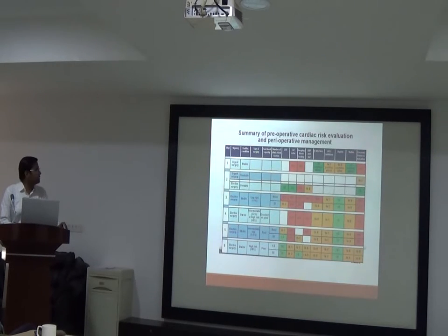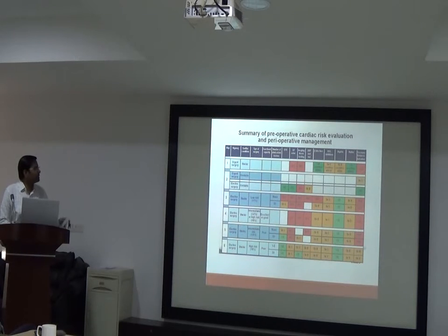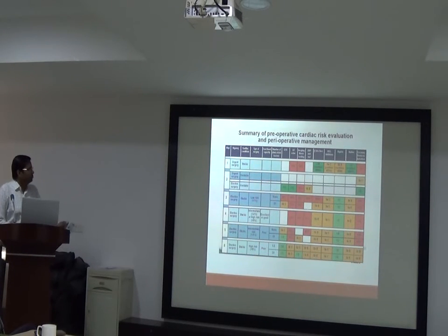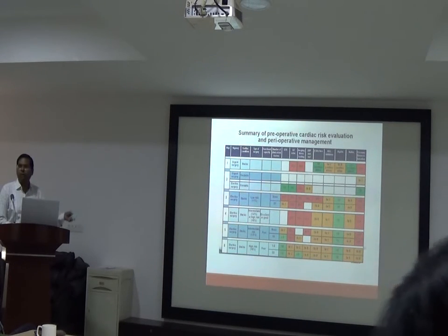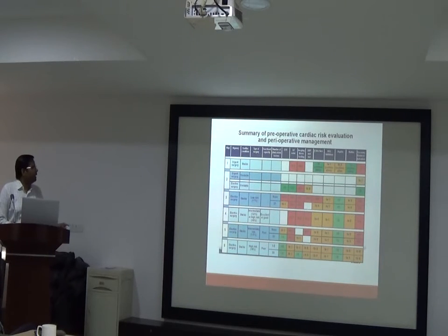Here is the summary table of everything discussed. For investigation in urgent surgery, the indication for ECG, echo, and stress testing is class 3C — it is harmful, so you should not perform these investigations for urgent surgery. For elective surgery, ECG and echo must be done — it is class 1C indication.